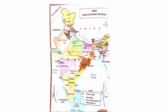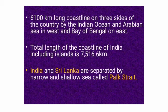About 6,100 km long coastline of India is washed on three sides of the country by the Indian Ocean and its two arms, namely the Arabian Sea in the west and the Bay of Bengal in the east. The total length of the coastline of India including islands is 7,516.6 km.